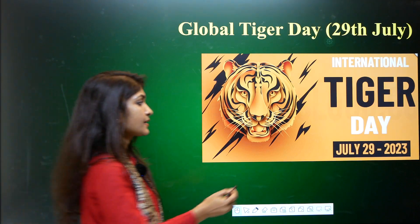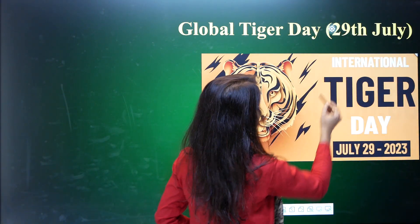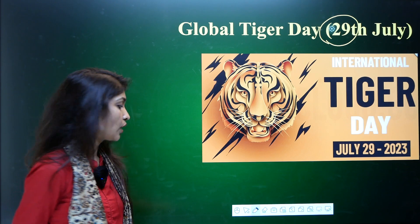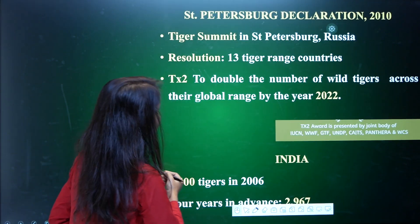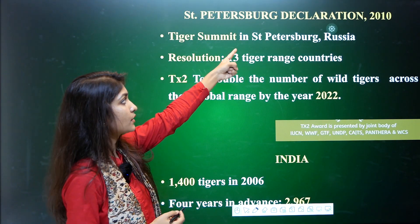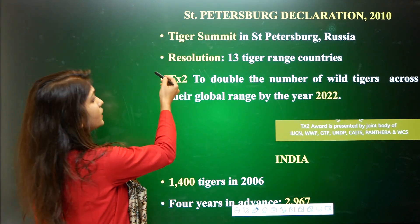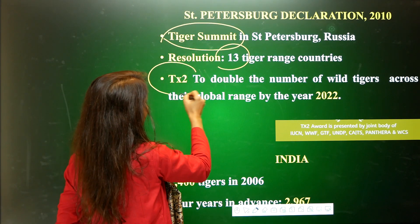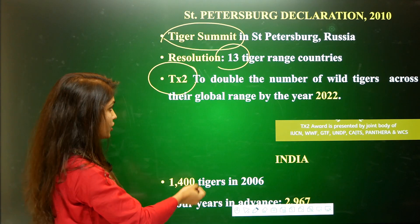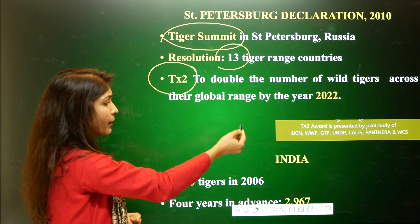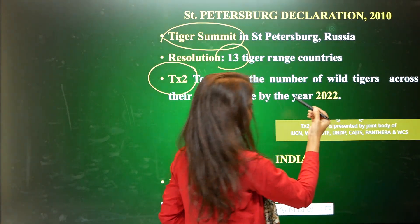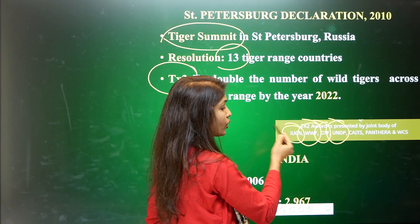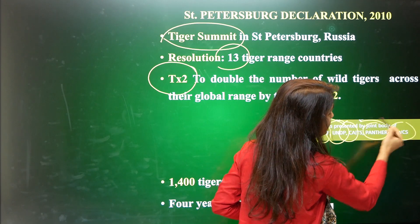Global Tiger Day is celebrated on 29th July every year, with its origins in the St. Petersburg Tiger Summit held in 2010 in Russia. At this summit, 13 tiger range countries took the oath for TX2 — doubling the tiger population. The TX2 Award is given by a forum including IUCN, World Wildlife Fund, Global Tiger Forum, United Nations Development Programme, CATS, Panthera, and Wildlife Conservation Society.